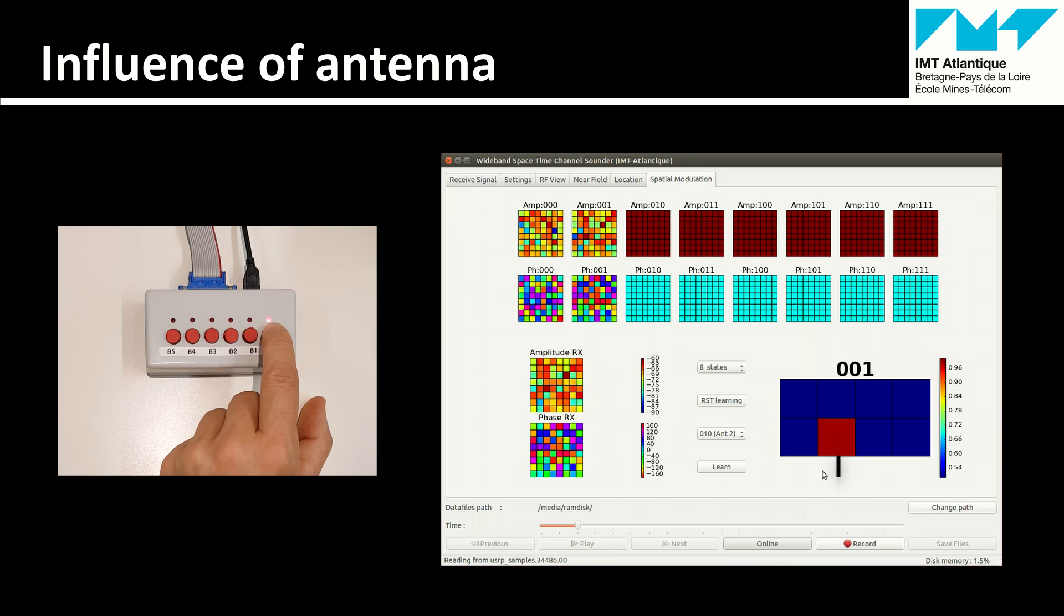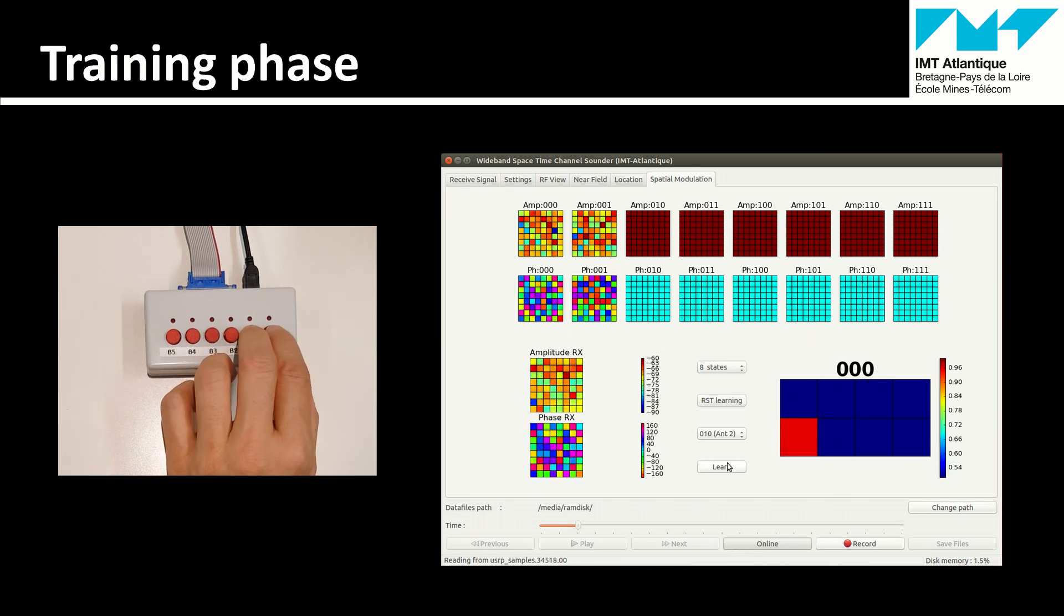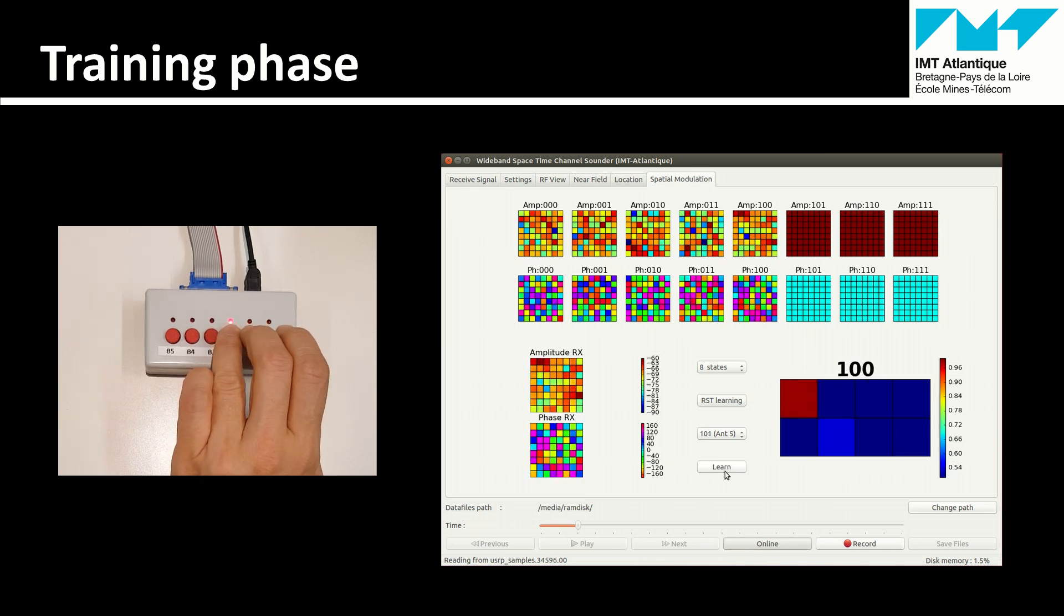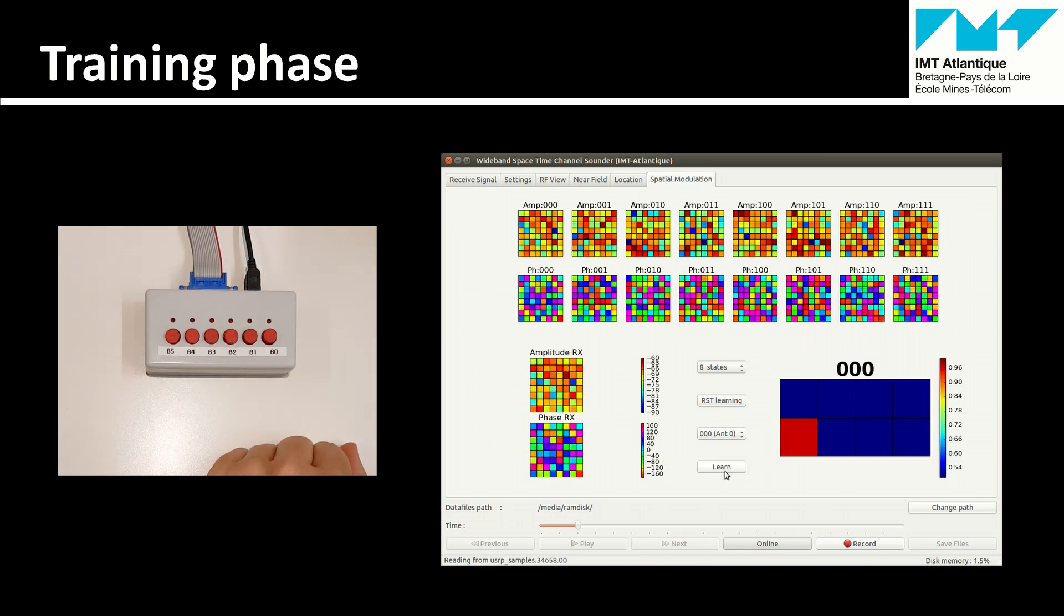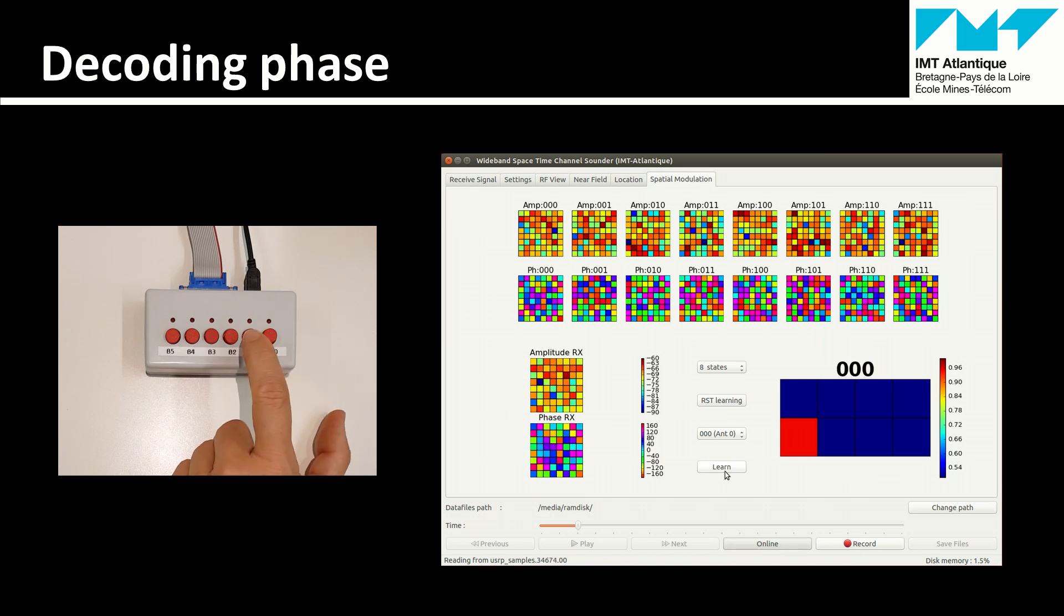Now we can increase the complexity and learn the different antennas. So one by one, we select one of the eight antennas and the signature is stored in the base station. Okay, now the eight symbols are learned and known by the base station.